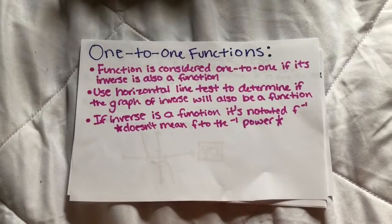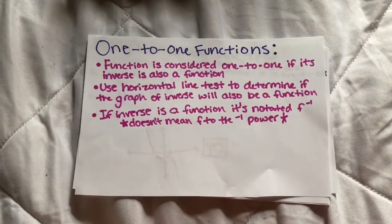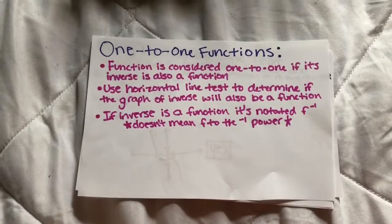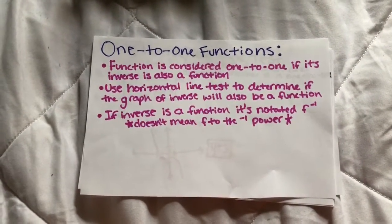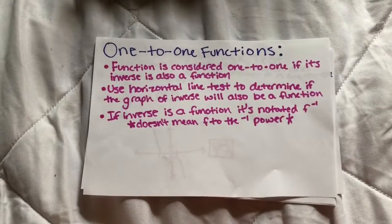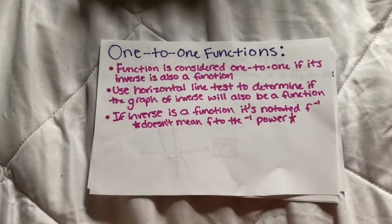One-to-one functions. A function is considered one-to-one if its inverse is also a function. Use the horizontal line test to determine if the graph of the inverse will also be a function. The inverse of the function is notated f inverse. This doesn't mean f to the negative first power.